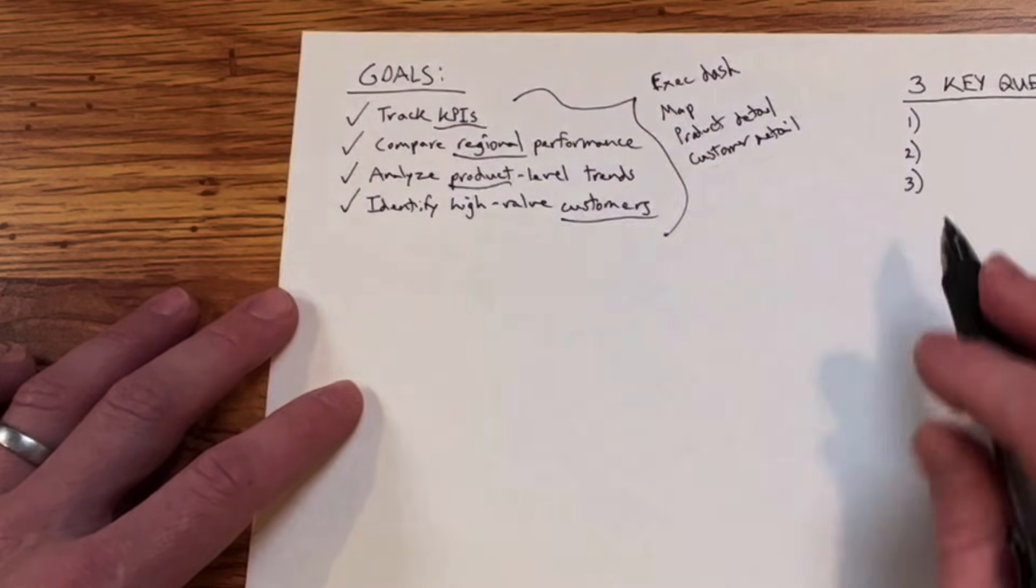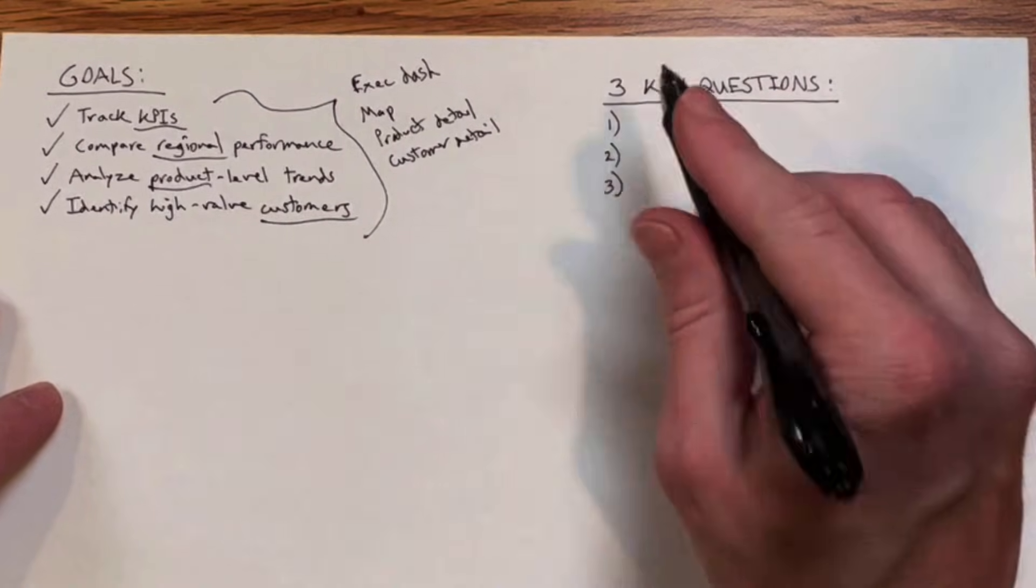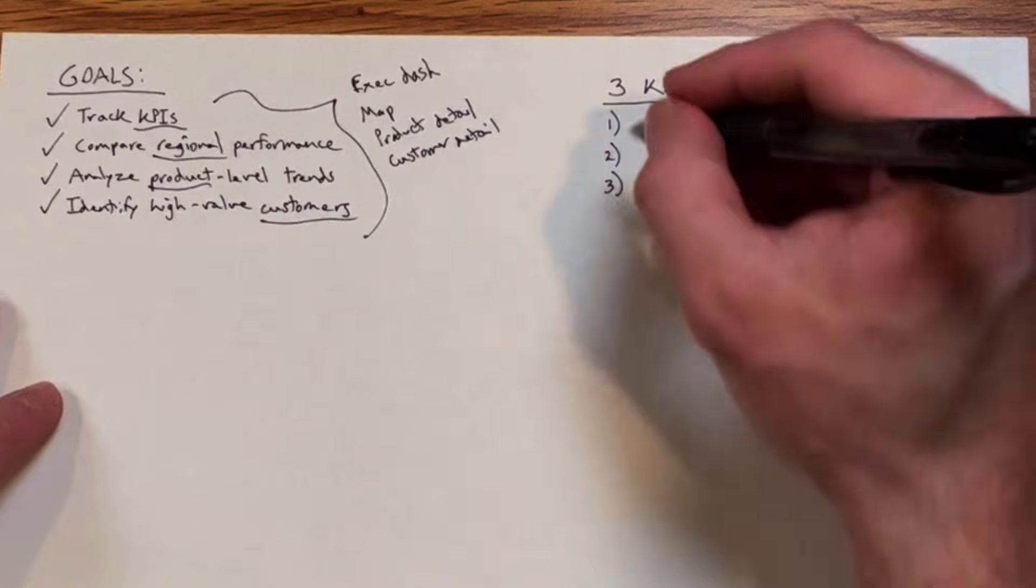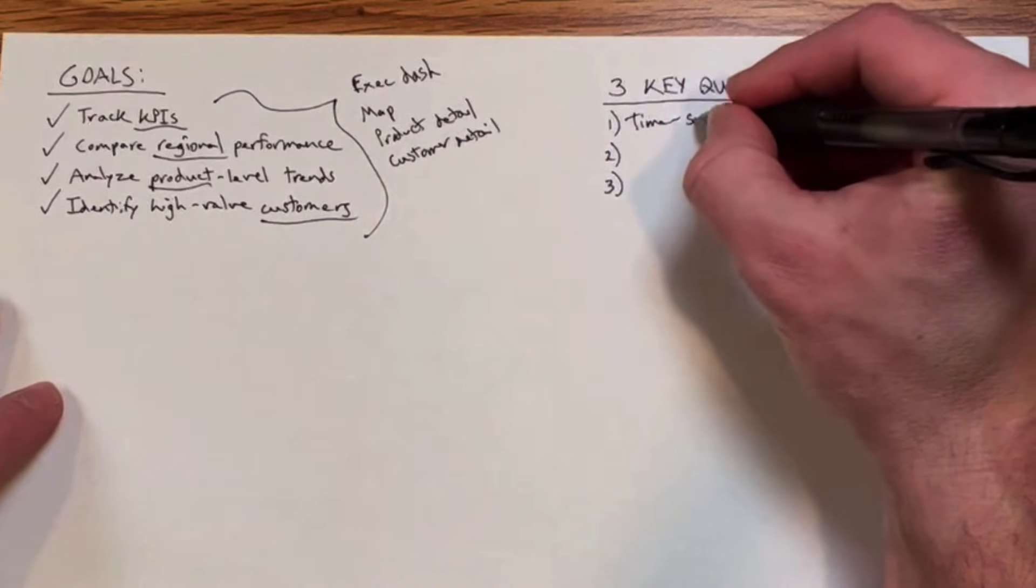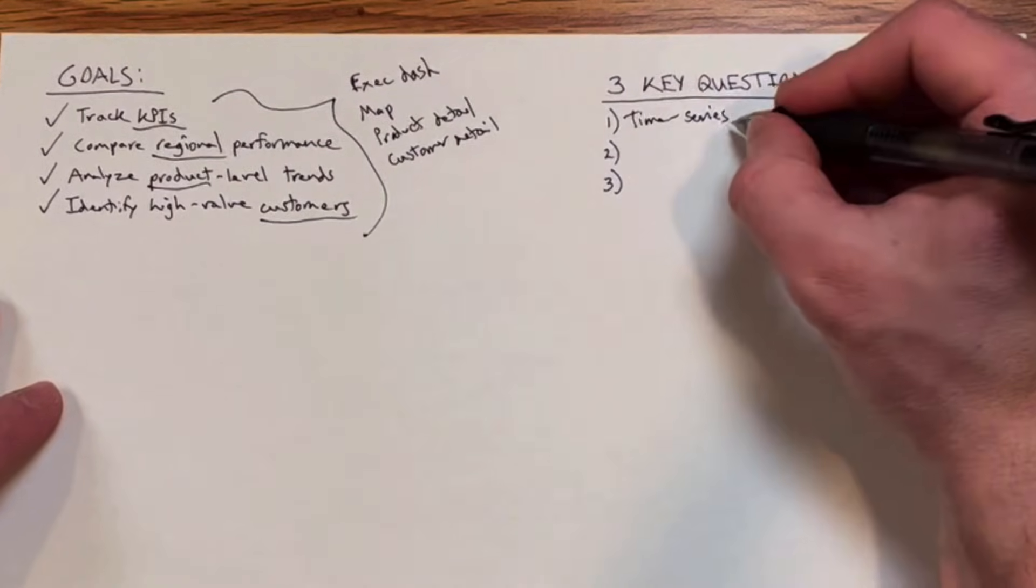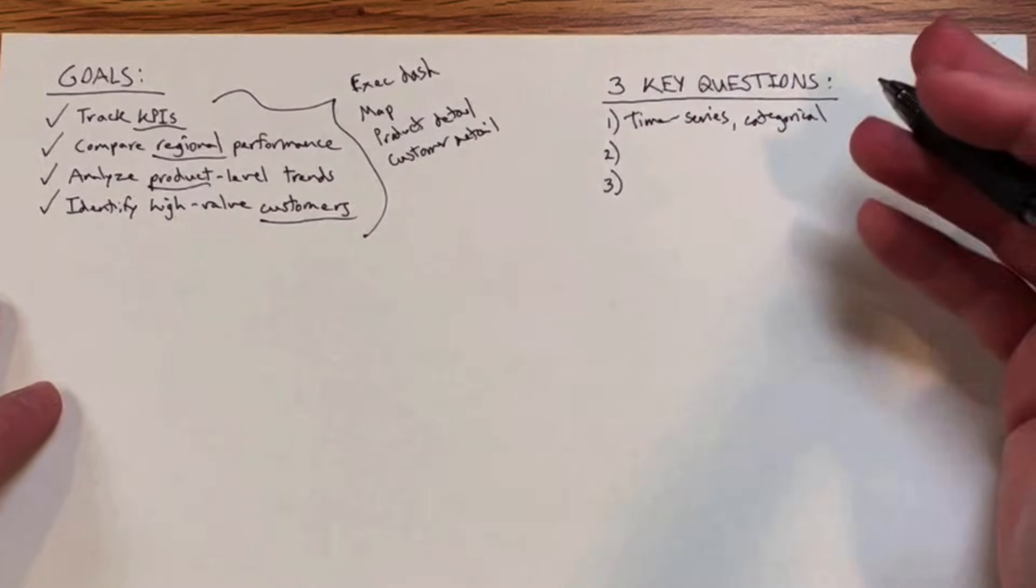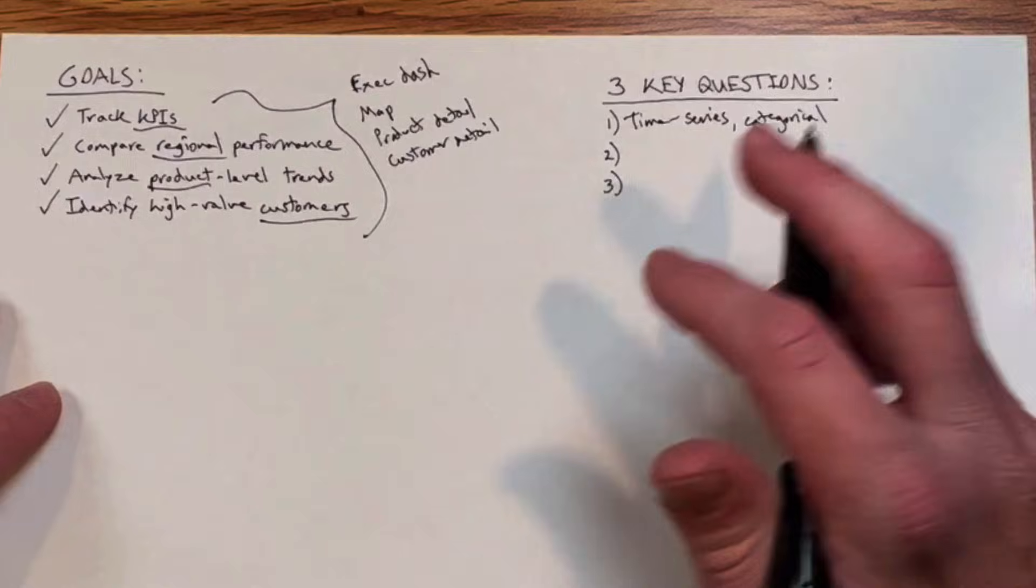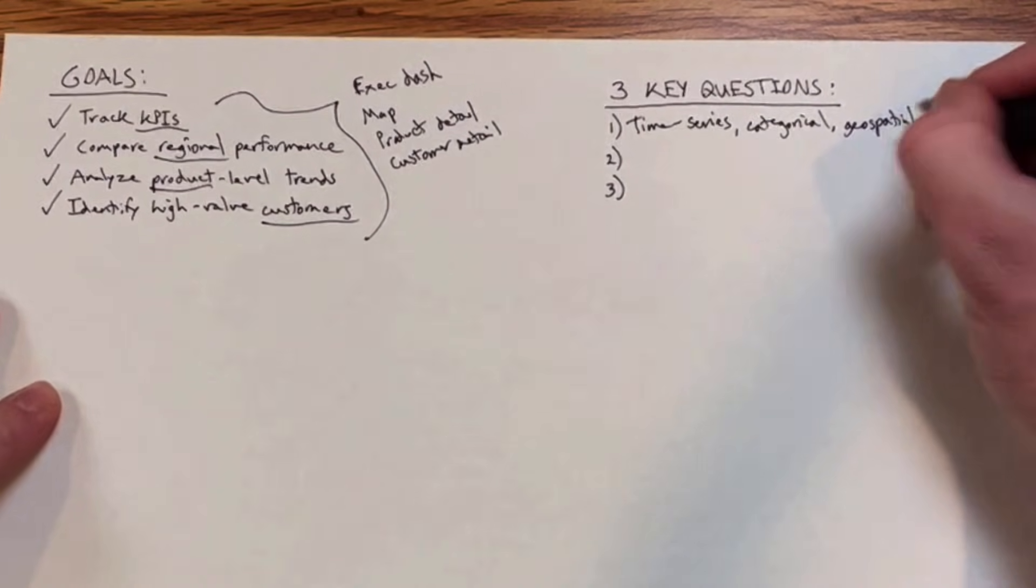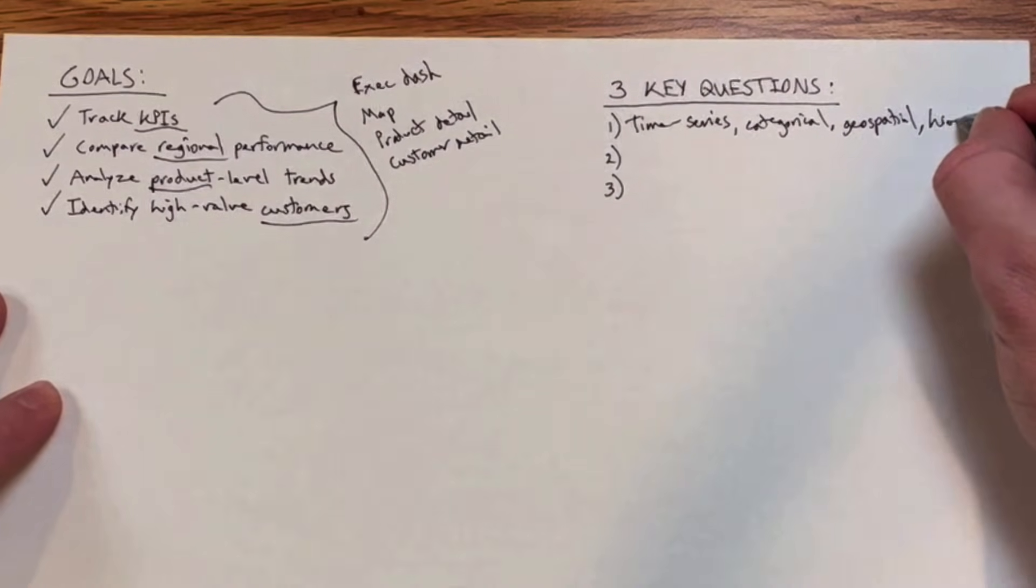Thinking back to our three key questions with the AdventureWorks data in mind: Question one, what type of data are we dealing with? We've got calendar tables, so we certainly have time series, and we'll definitely do a lot of line charts and time trending in our dashboard. We've got categorical fields as well, like product category and subcategory, different ways that we can segment or slice and dice our data. We've got geospatial—that territory lookup with fields like continent and country and region. And we also built some hierarchies as well.